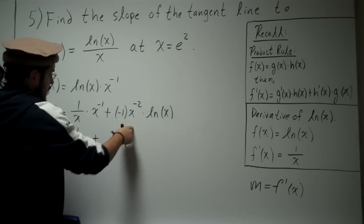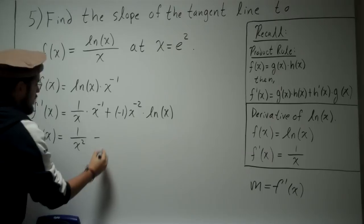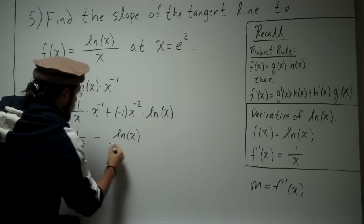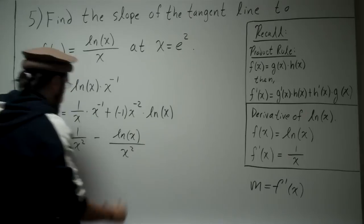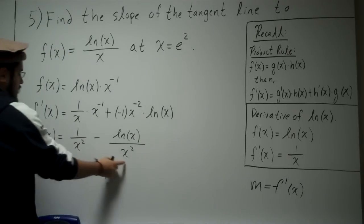Plus, we can bring this x squared down. Actually, minus and plus is minus. Alright? So now we have ln(x) on the numerator, and we have x squared on the denominator. Okay, so we can go ahead and combine these two fractions, since they have x squared and x squared.